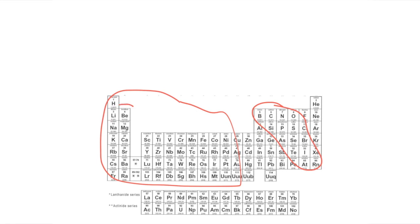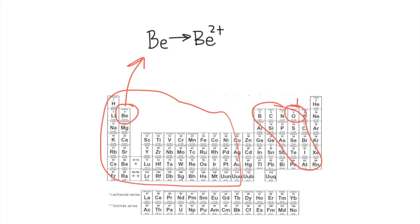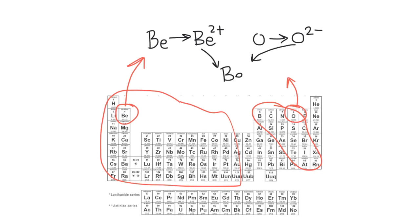For example, a beryllium atom forms an ion. Since it's in group 2, the beryllium atom turns into a beryllium ion with a 2+ charge. That can form a compound with an oxygen atom. Since oxygen is in group 6, it forms an ion with a 2− charge. When the compound forms, these come together and balance out their charges to form the beryllium oxide compound.